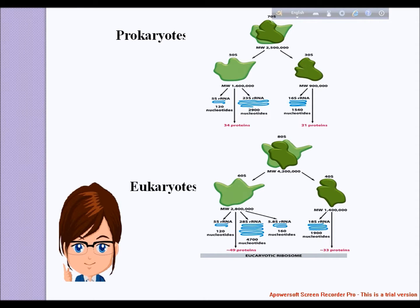In prokaryotes, the small 30S ribosomal subunit contains the 16S ribosomal rRNA. The large 50S ribosomal subunit contains two RNA species: the 5S and 23S ribosomal rRNA. In bacteria, the 16S ribosomal rRNA, 23S ribosomal rRNA, and 5S rRNA genes are typically organized as a co-transcribed operon.